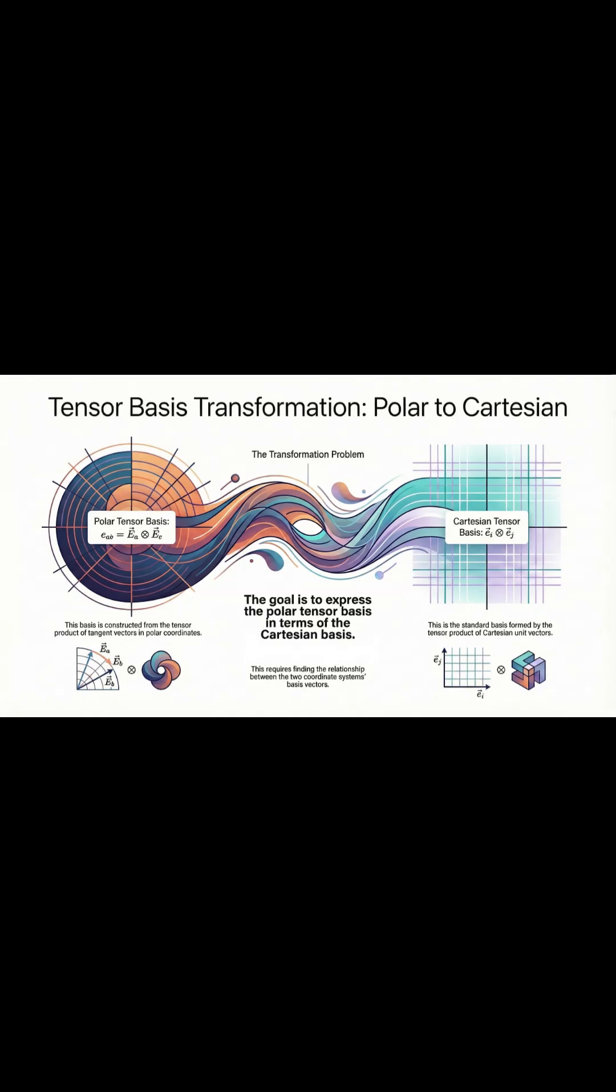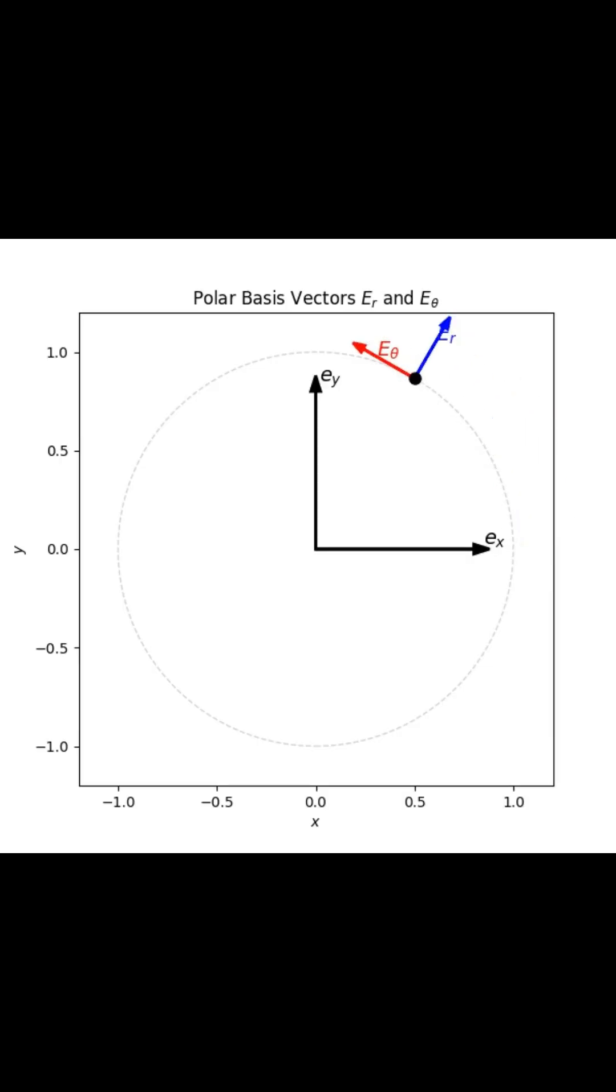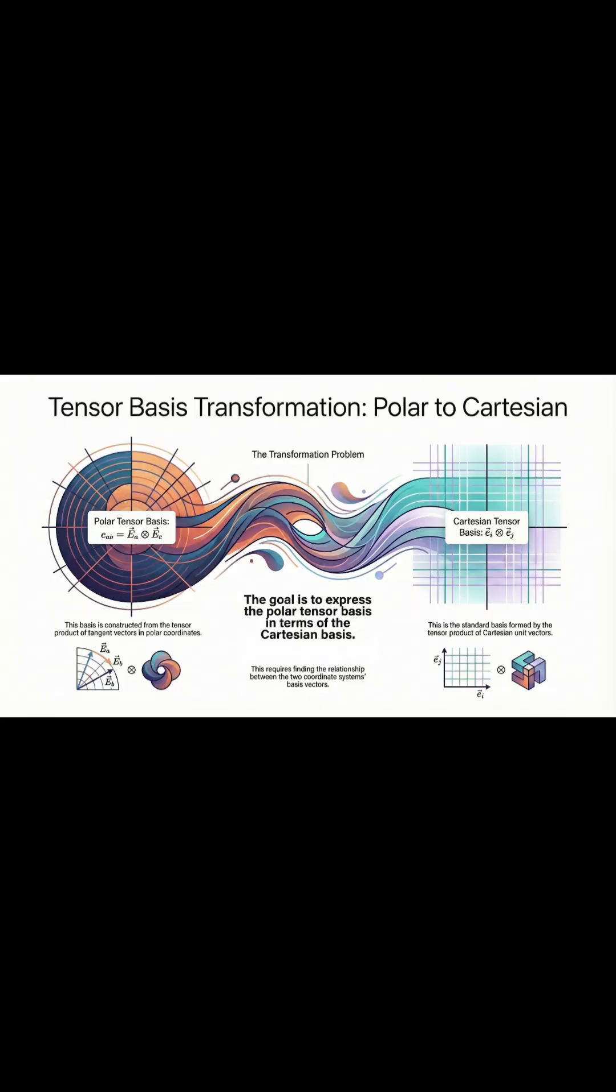Second, since our physical vectors are moving, we need a mathematical tool that can keep up. So we build what's called a tensor basis. We create it using a special operation called the outer product of the vectors, which gives us the exact algebraic structure to describe that rotation.